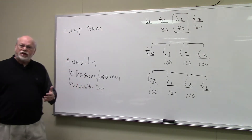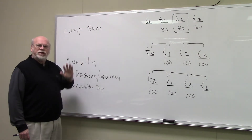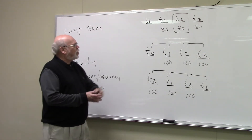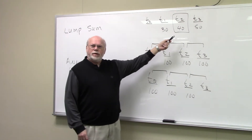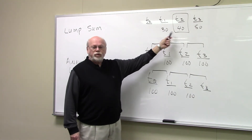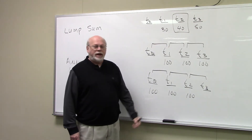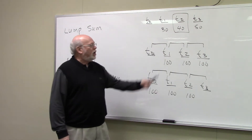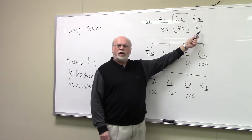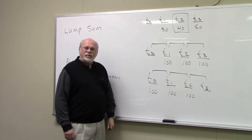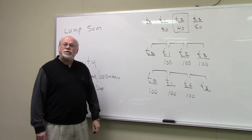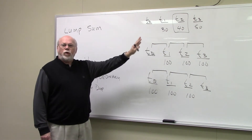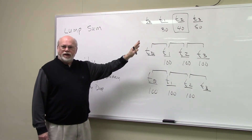Let's talk about lump sum cash flows first. A lump sum cash flow is a cash flow that has no equal cash flow in any adjacent time period. What I've drawn up on the top here is a three lump sum cash flow timeline. The $40 cash flow, for instance, is a lump sum cash flow because there's no equal cash flow in any adjacent time period. In fact, the $30, the $40, and the $50 are all lump sum cash flows.